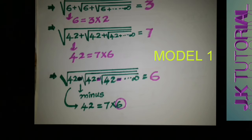The square root of 6 plus the square root of 6 plus the square root of 6, and so on to infinity. Here we have 6, and all operations are plus. We write 6 as the product of two consecutive numbers: 2 times 3. We take the larger number, 3, and that is the answer.